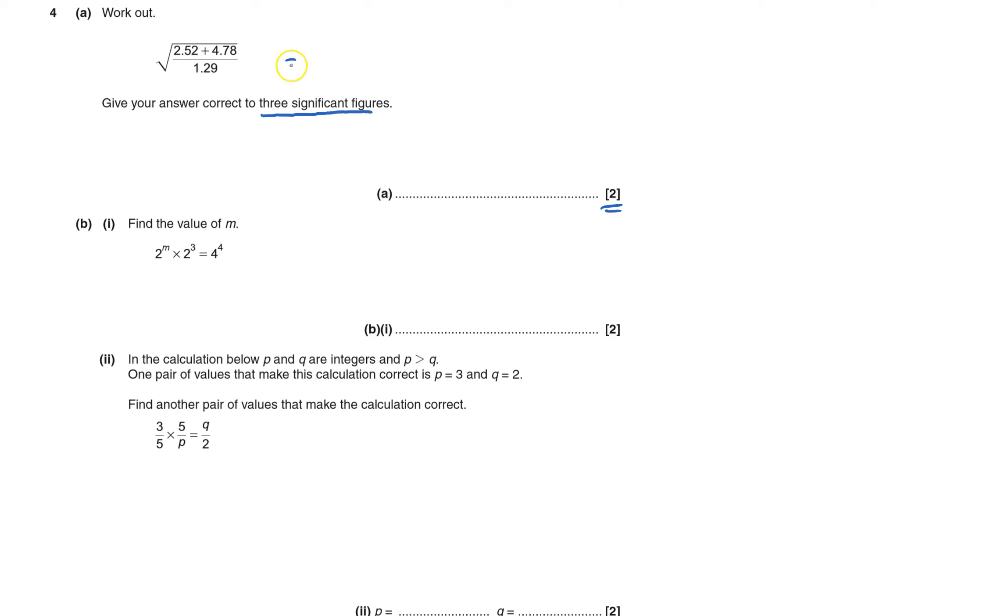This will give me, I'll calculate at 2.378847353. And three significant figures, I need the first three figures, and then I look at the next number. And the next number is five or bigger, so I round it up. So the answer is 2.38.